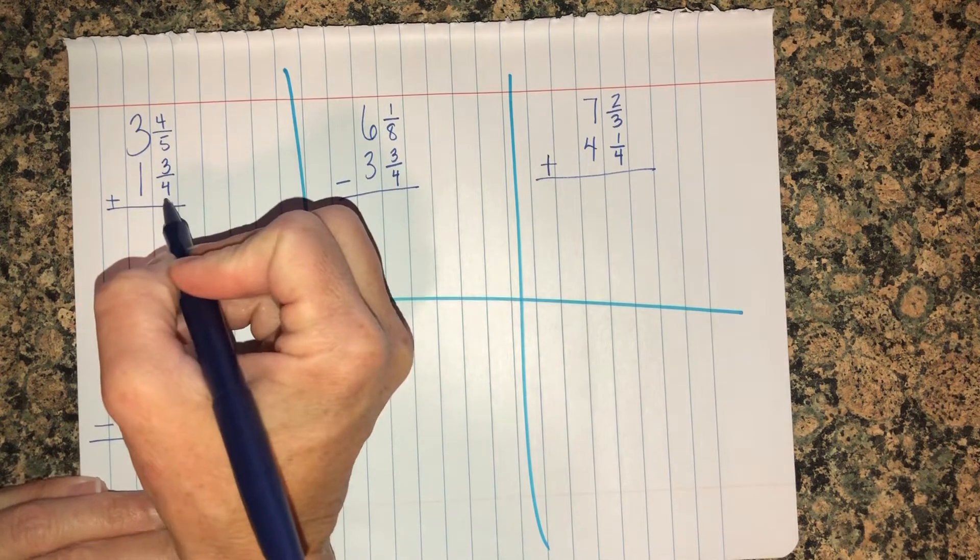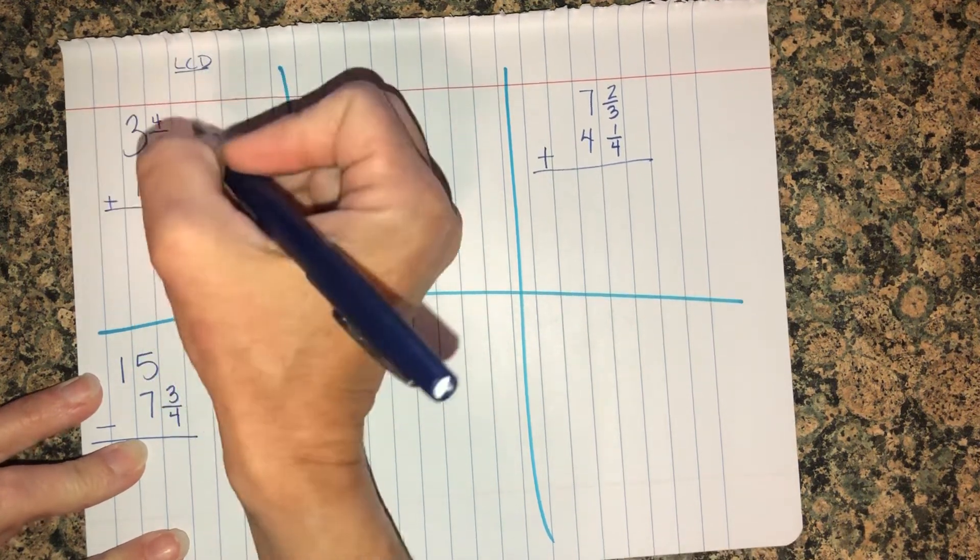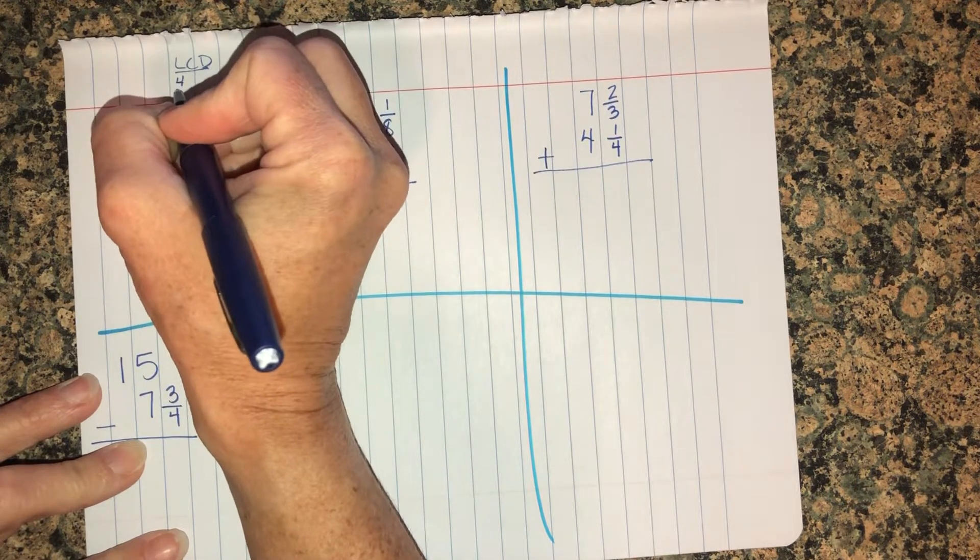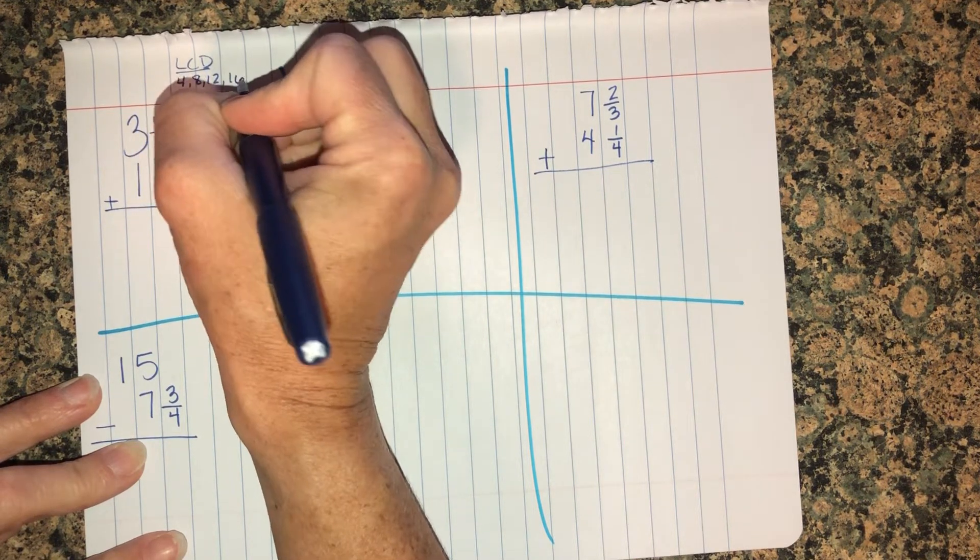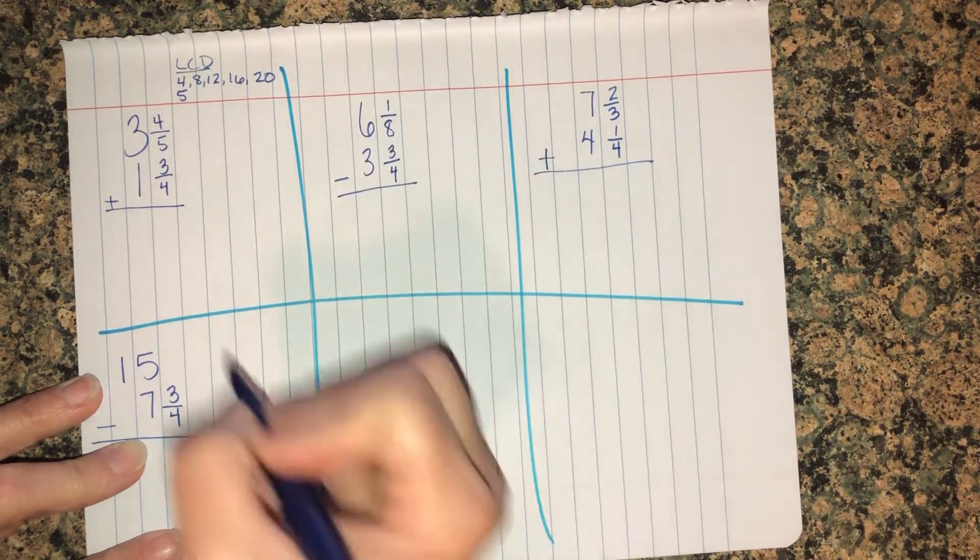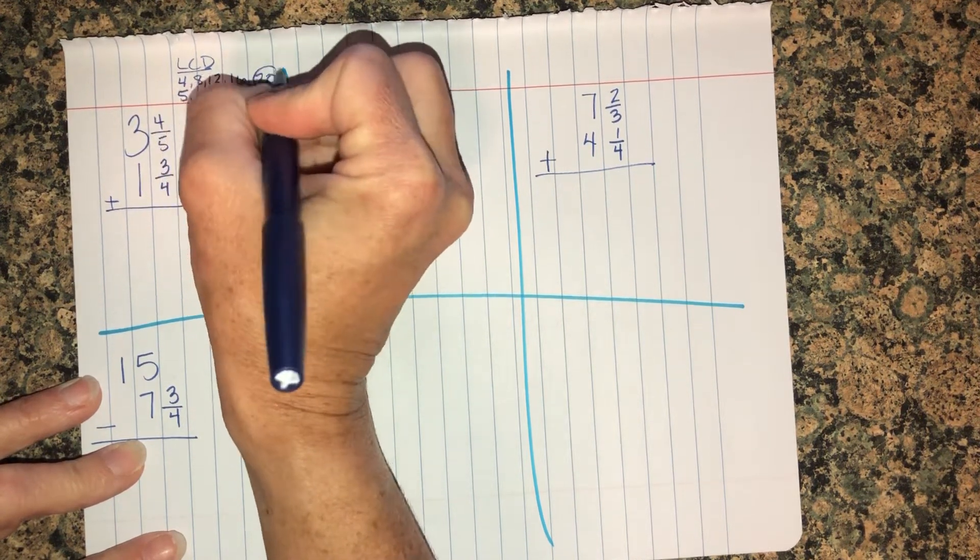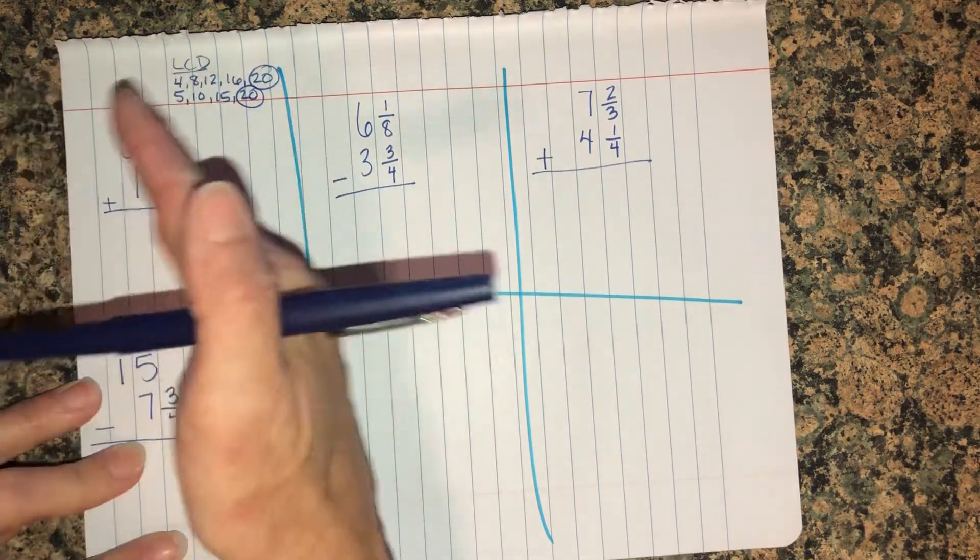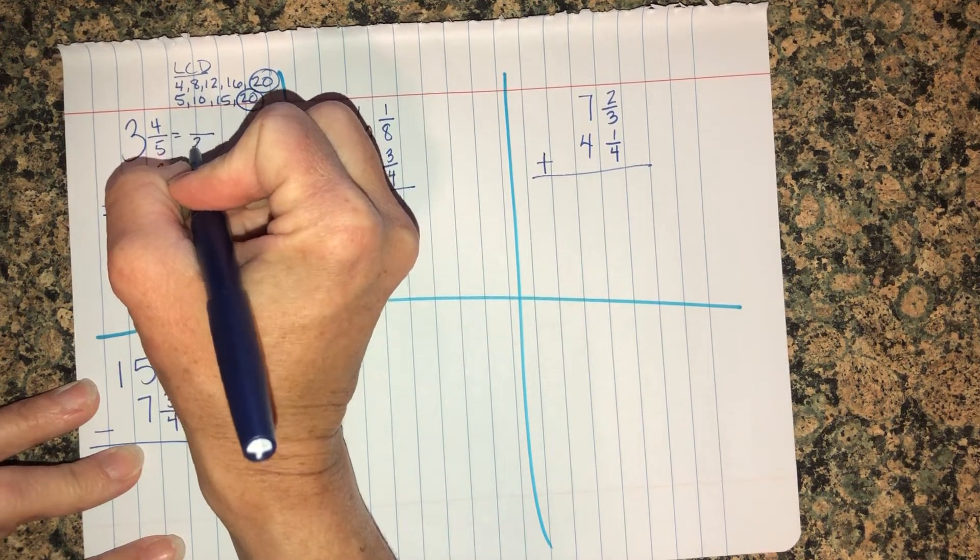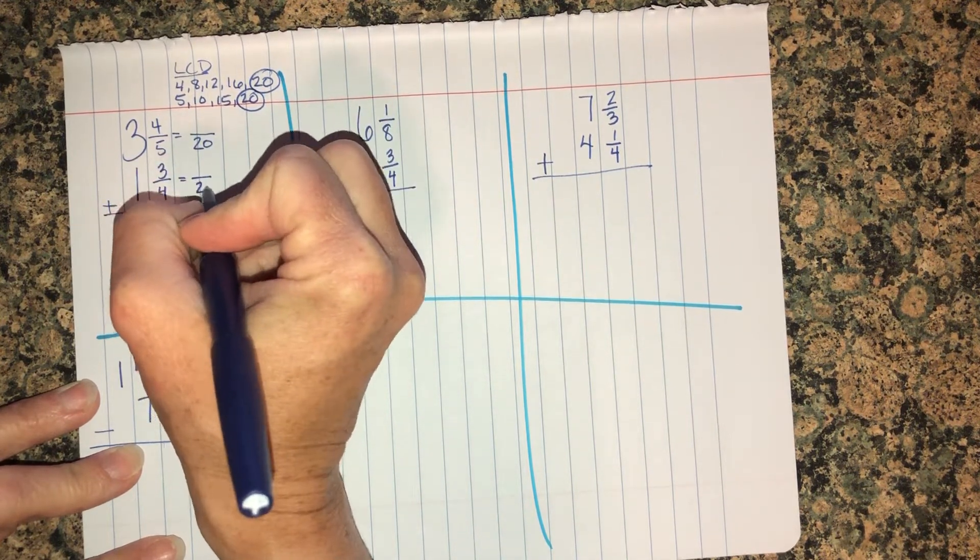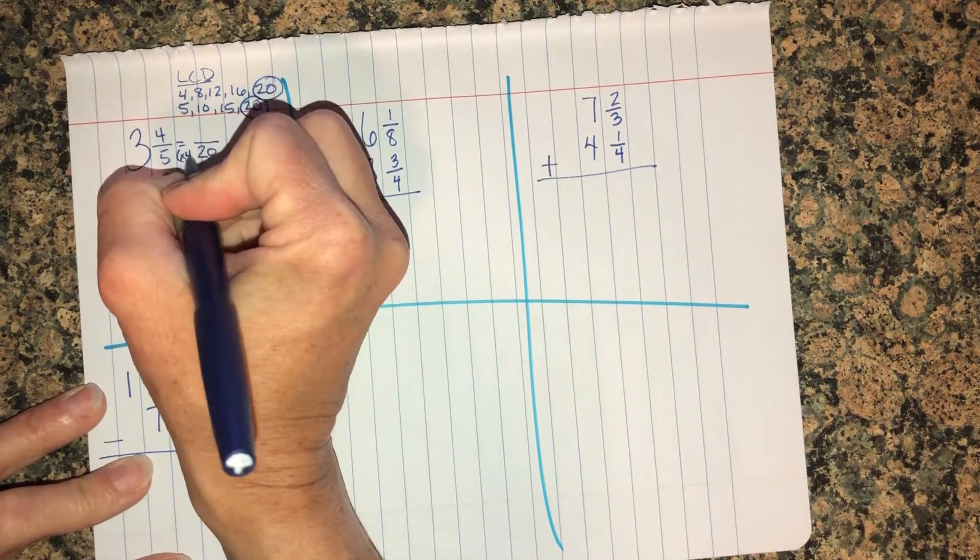Three and four fifths plus one and three fourths. I'm trying to throw in some different denominators that we haven't done a ton with. Four and five, you're actually going to go all the way out to twenty. Four, eight, twelve, sixteen, twenty. Five, ten, fifteen, twenty. I've had some kids thinking that they did something wrong listing a lot of numbers out. If you have a lot of multiples, it just means the least common denominator is the opposite denominator multiplied by the other one.